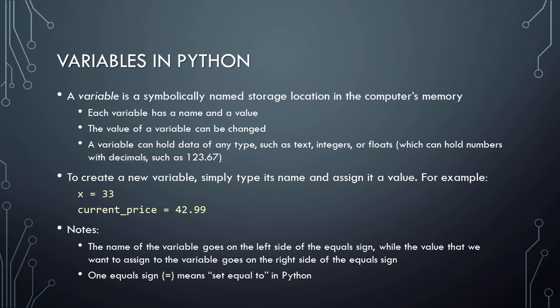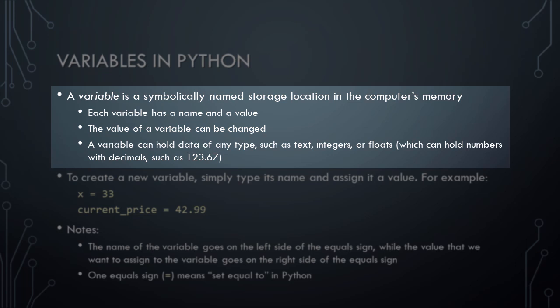Next, let's learn about variables in Python. A variable is a symbolically named storage location in the computer's memory. Each variable has a name and a value, and the value of a variable can be changed whenever necessary. For example, we might use a variable to keep track of how many tickets have been sold for a concert. Every time an additional ticket is sold, we can update the value of the variable so that it reflects the correct number of tickets sold.